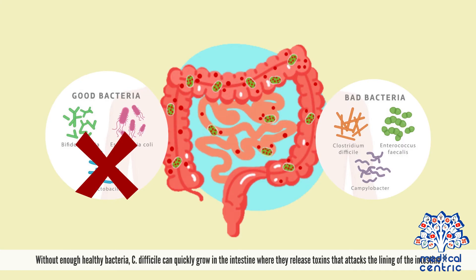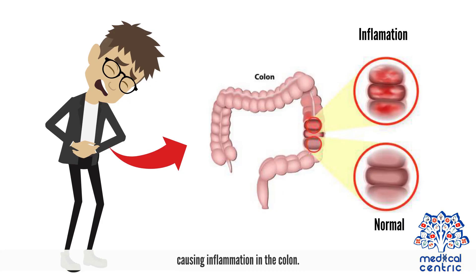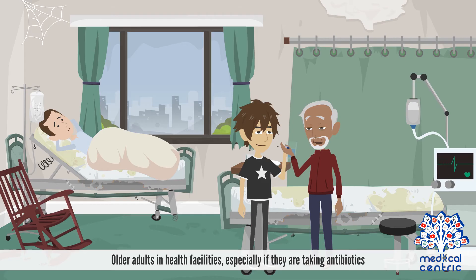Without enough healthy bacteria, C. difficile can quickly grow in the intestine, where they release toxins that attack the lining of the intestine, causing inflammation in the colon.